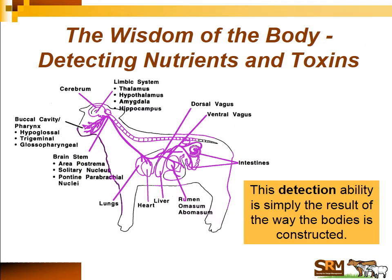The reason this relationship between flavor and consequences is so strong is because our bodies are designed to relate flavor to consequences — that's how we detect nutrients and toxins in foods. There are nerves in the mouth, the buccal cavity, connected to cells in the gut that indicate the nutrients or toxins in a food, all processed through the area postrema at the base of the brain. Nearly every animal has this ability — it's the wisdom of the body, the way we're designed to detect nutrients and toxins and relate them to flavors.